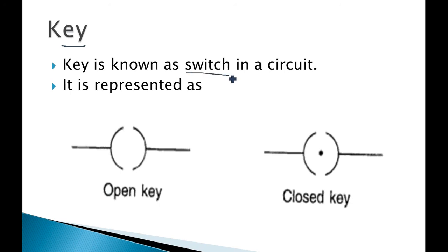A switch controls whether current flows or does not flow. We have two types of key: an open key and a closed key. An open key means the switch is off so current cannot flow through it. A closed key means the switch is on so current can flow through it.